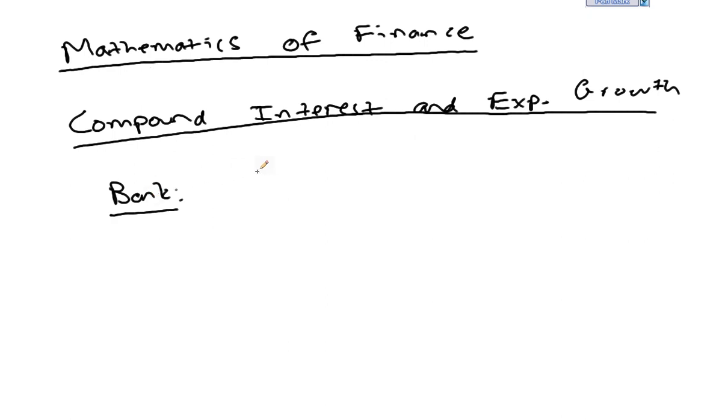So the bank is going to offer you, we'll just say, a 12% rate. And we call this an APR for annual percentage rate.